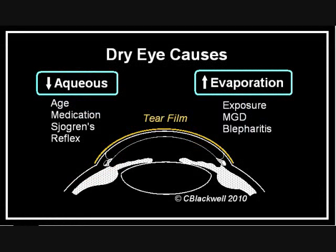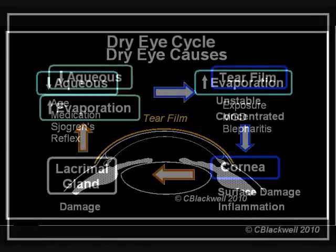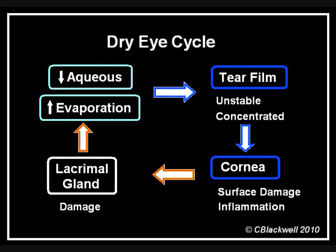Dry eye usually starts with a decrease in tear production or increased evaporation. Those initial events are the first stage in a cycle of progressive damage. The tear film becomes unstable and concentrated, which causes damage to the cells on the surface of the cornea. That in turn triggers the process of inflammation, which causes more corneal damage and affects the lacrimal gland. That is where we left off after Part 1.